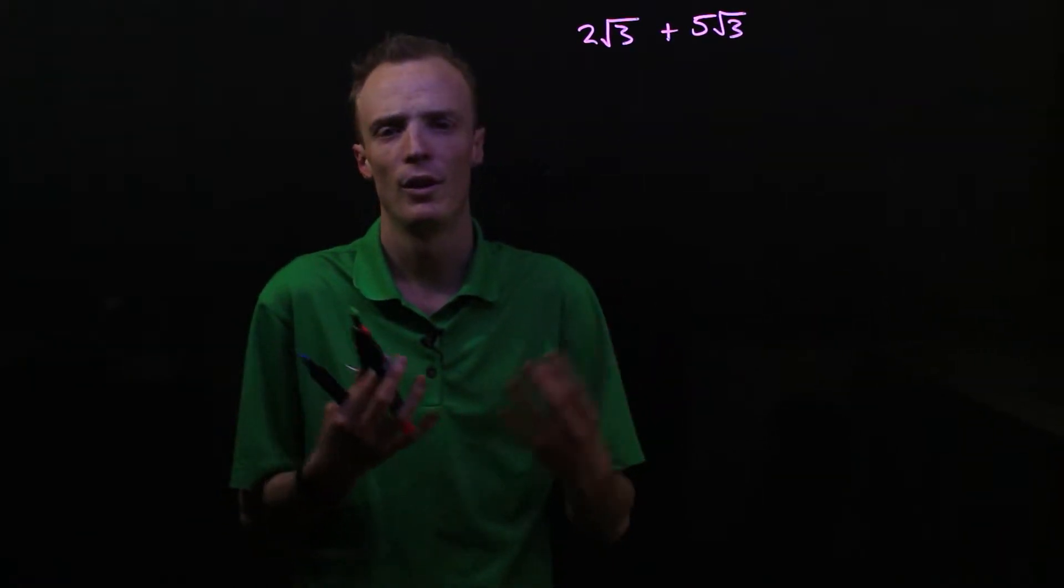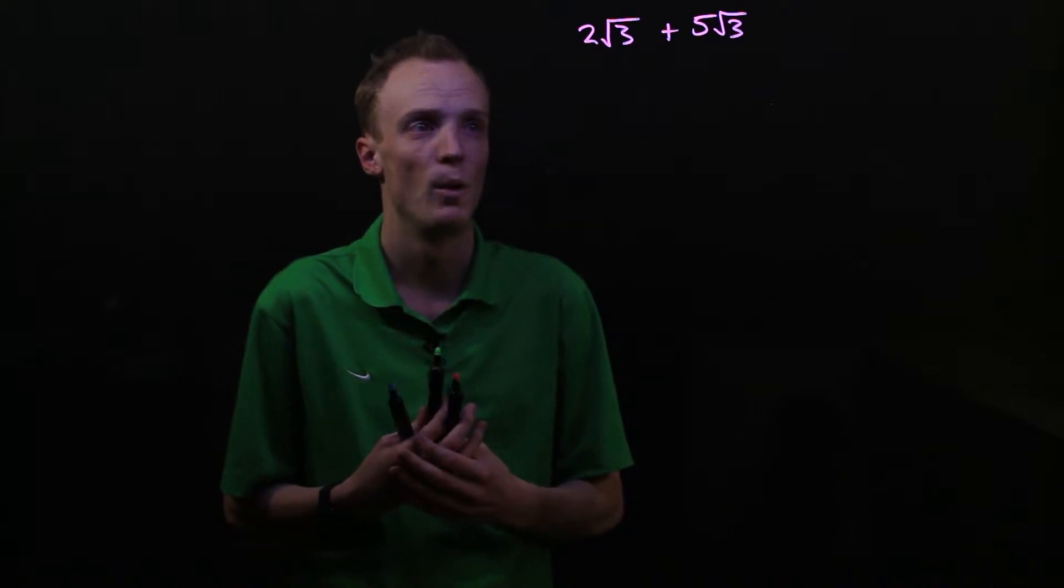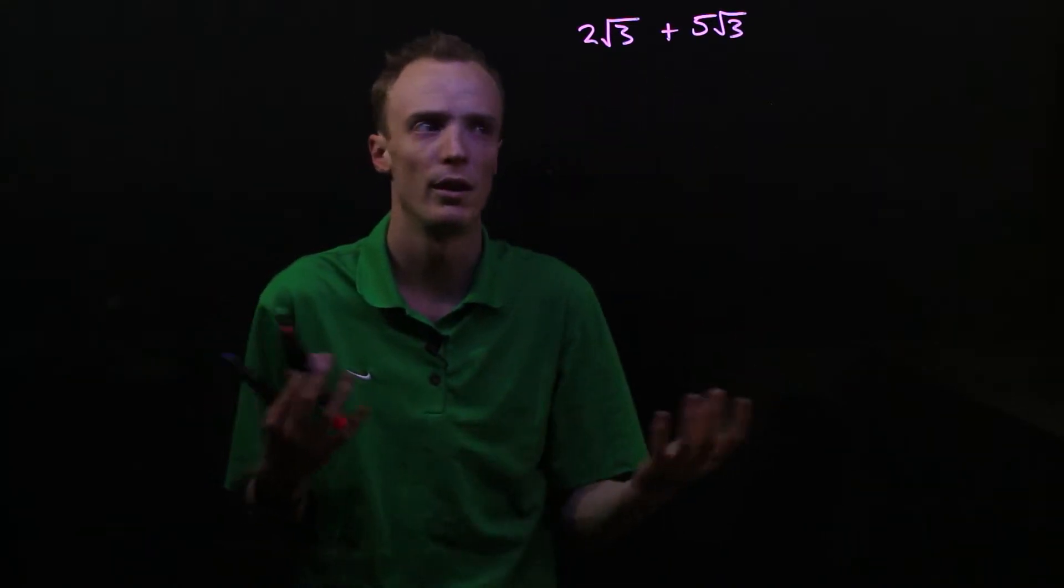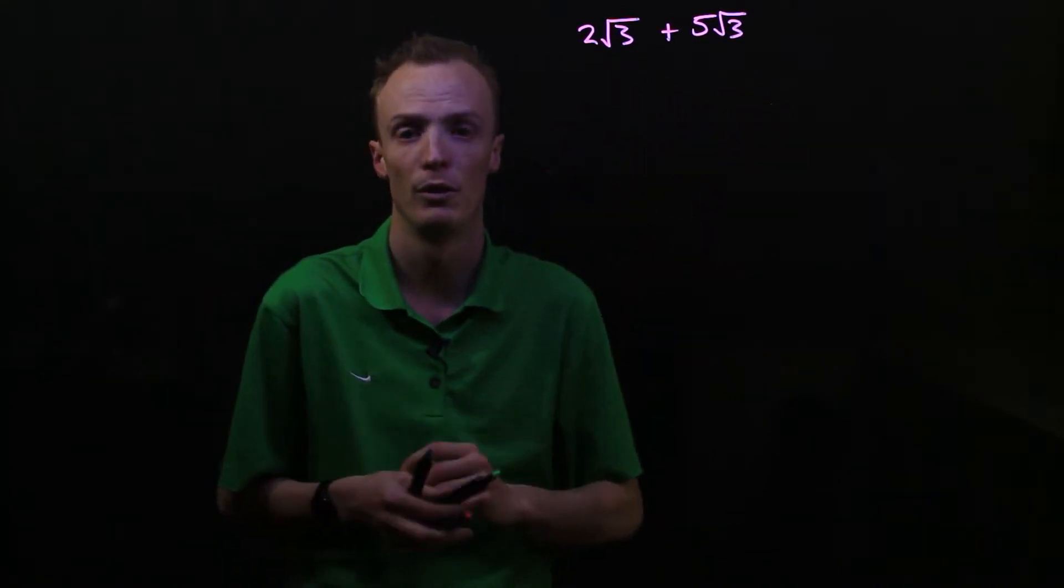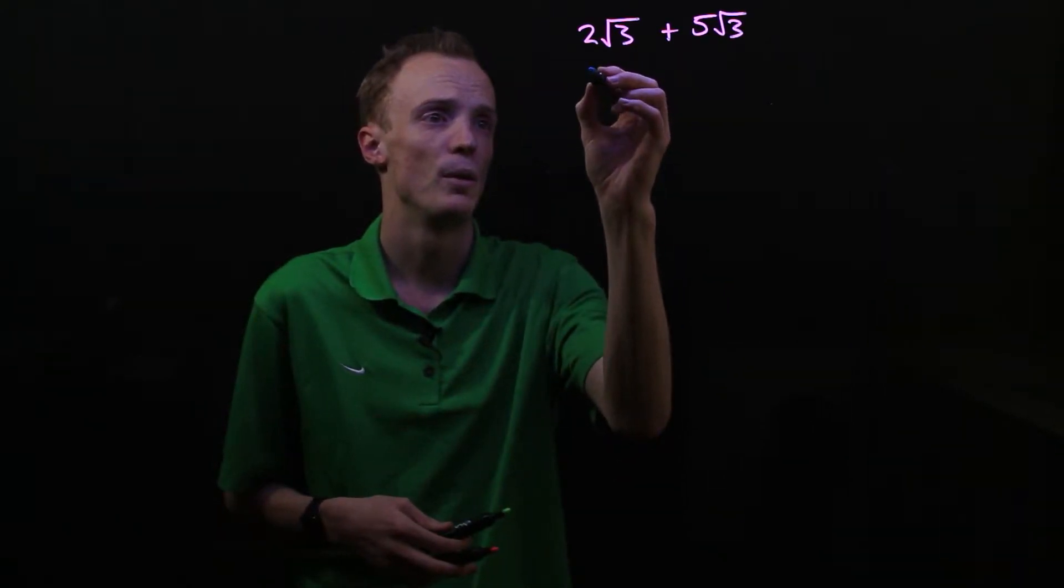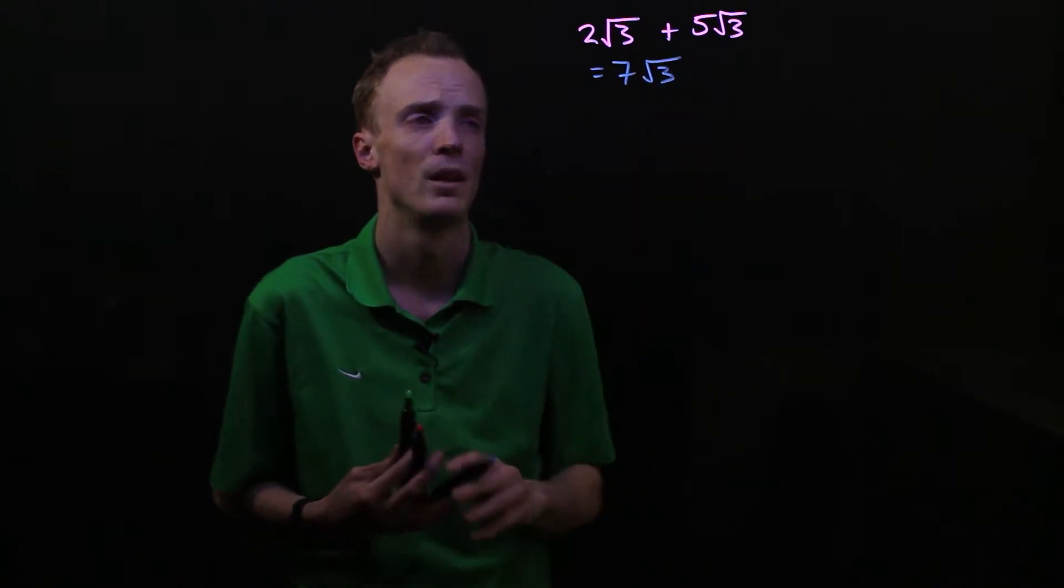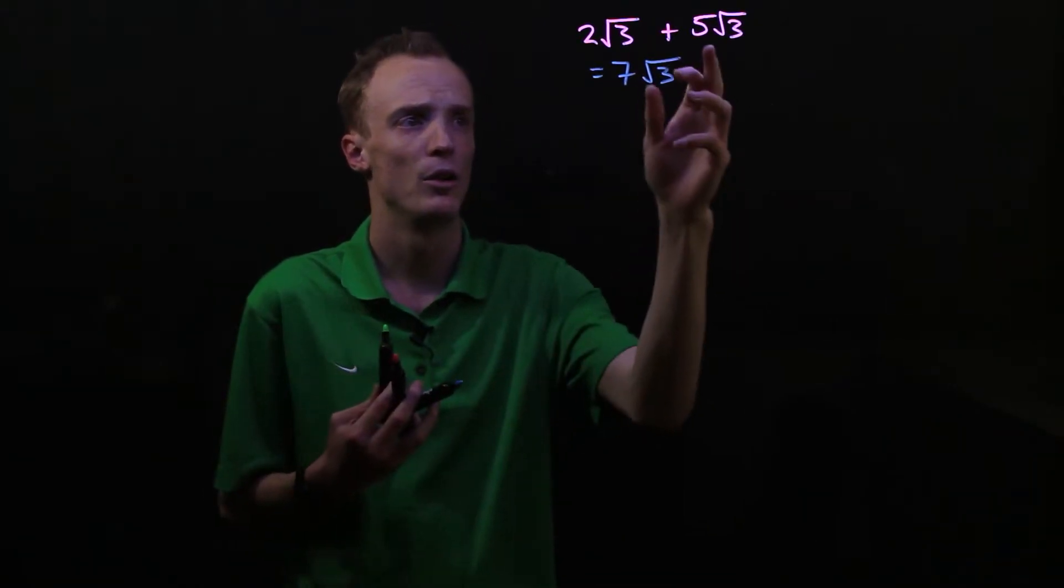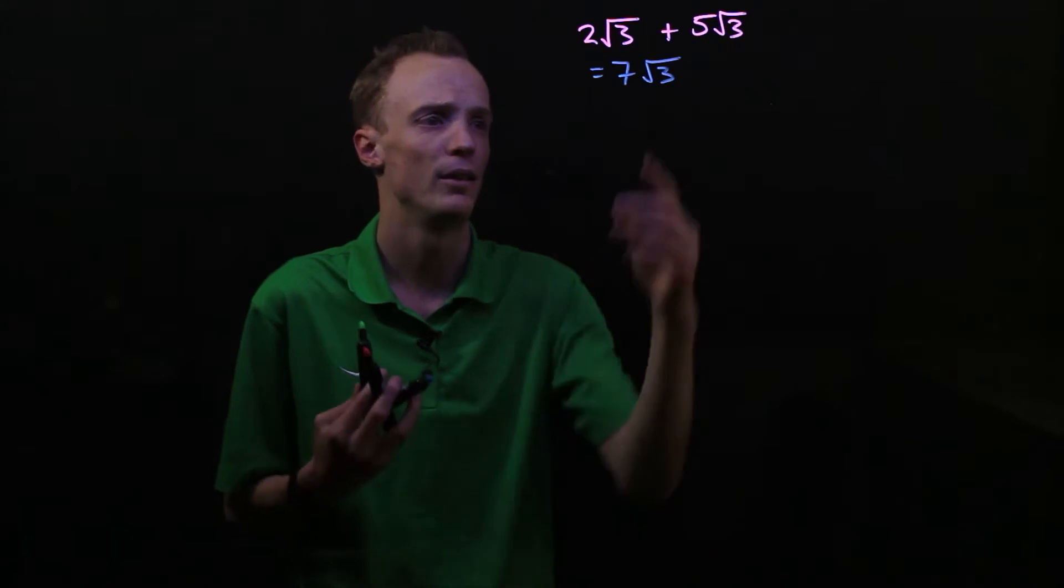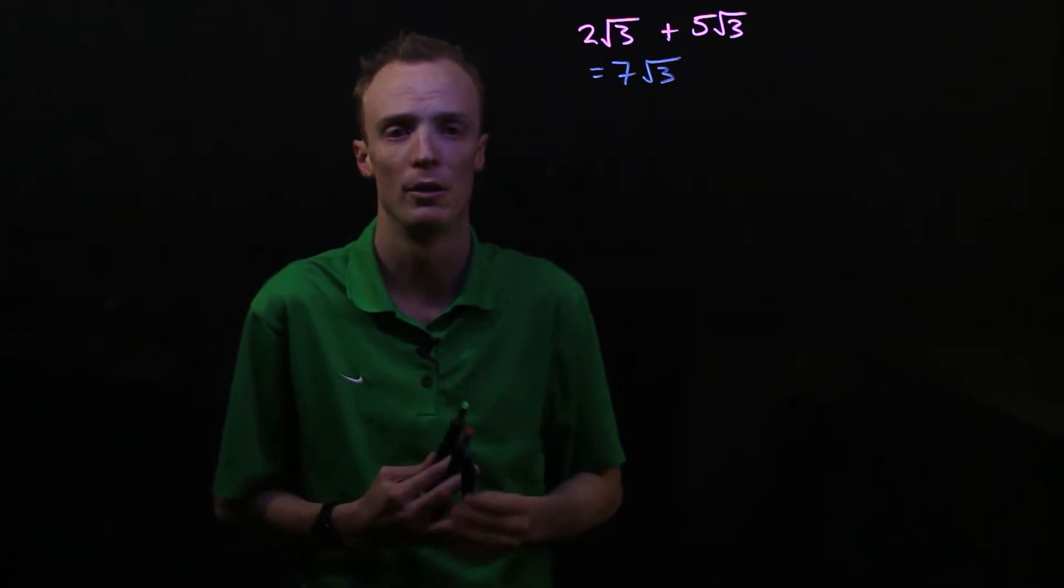When we're dealing with surds, we consider it pretty much the same way. We've got 2 lots of √3 and we're adding another 5 lots of √3, so in essence here we have 7 lots of √3. Essentially we're adding the coefficients together and then keeping the √3.